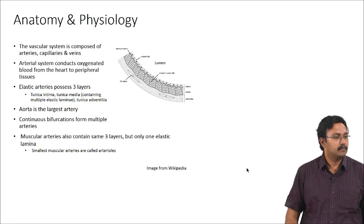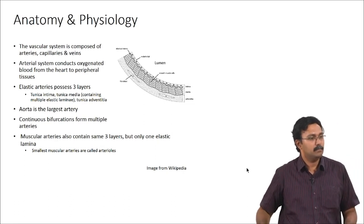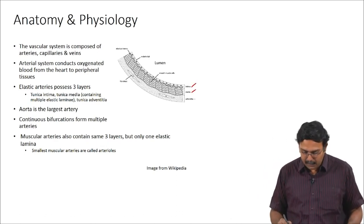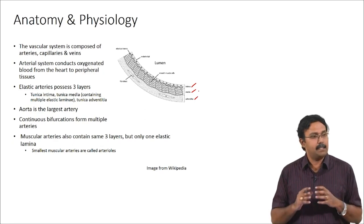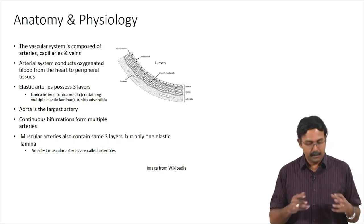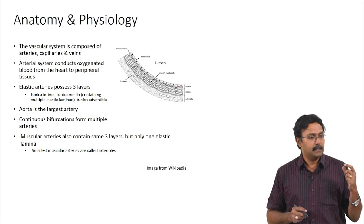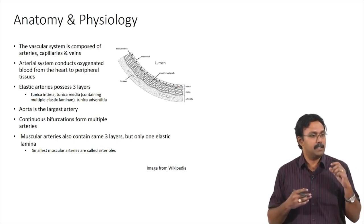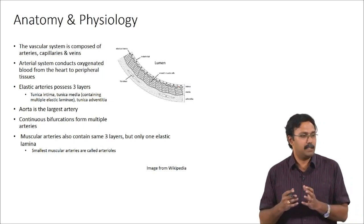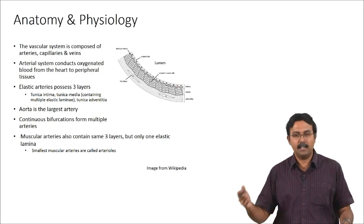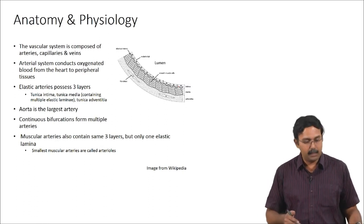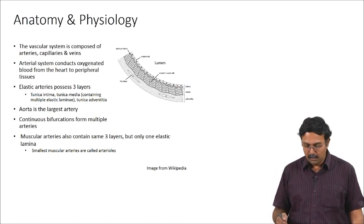Muscular arterioles have all three layers: intima, media, and adventitia — these three layers are present in all arteries. However, in the aorta and larger arteries, the media is much thicker, with multiple layers of smooth muscle cells, providing the ability to withstand higher pressures. As you move into muscular arteries and arterioles, this layer becomes thinner — just one layer instead of multiple layers of smooth muscle cells in the tunica media.